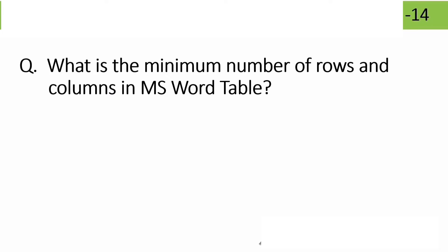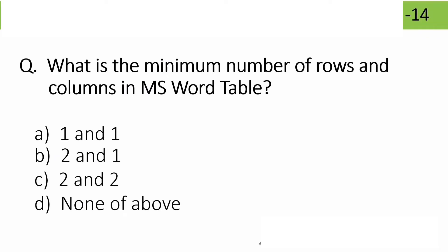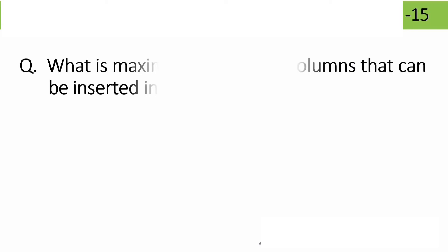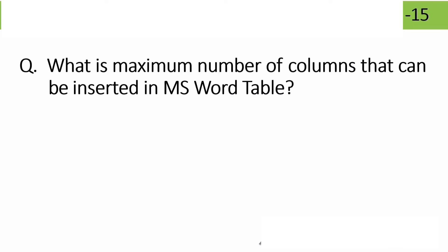What is the minimum number of rows and columns in an MS Word table? Options: 1 and 1, 2 and 1, 2 and 2, none of the above. The correct answer is option A: 1 and 1 — minimum is one row and one column.